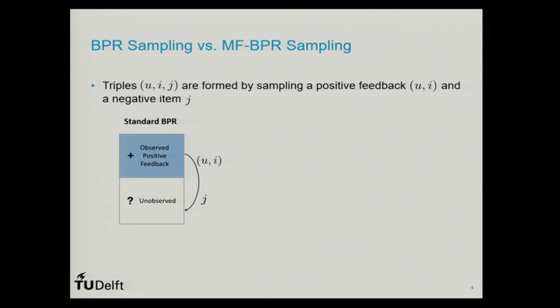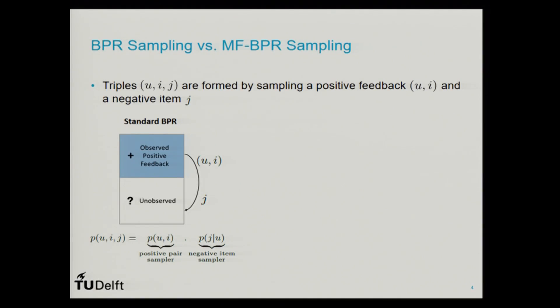To quickly show how our sampling method compares to standard BPR: in BPR we have triples of a user, positive item, and negative item, which are used for training. In standard BPR, the user and positive item are sampled from the positive feedback, and the negative item is typically sampled from items without any feedback. We assume these triples are sampled from a joint probability distribution, which can be expanded into a positive pair sampler that samples u and i, and a negative item sampler that samples the negative item j.